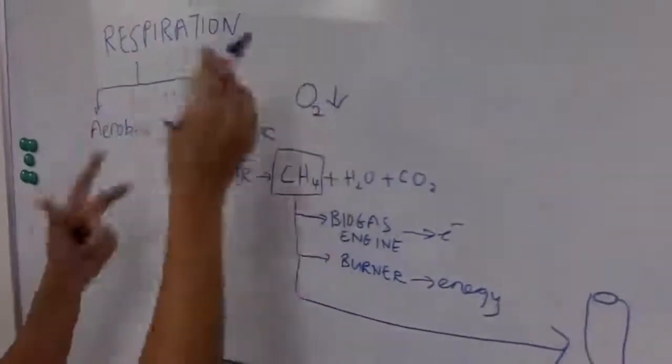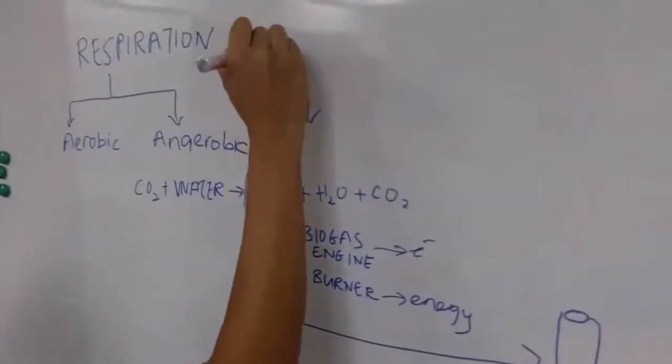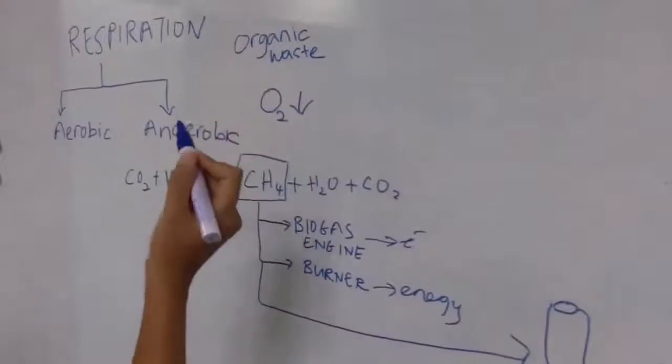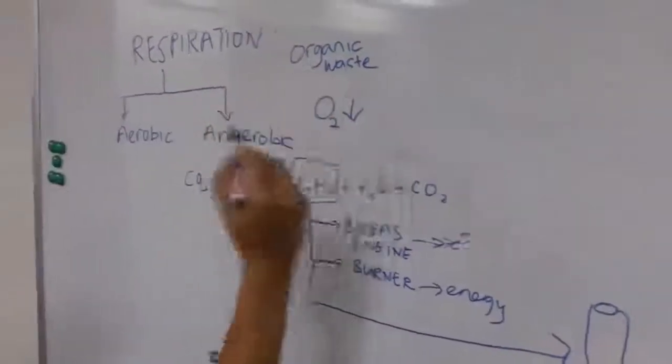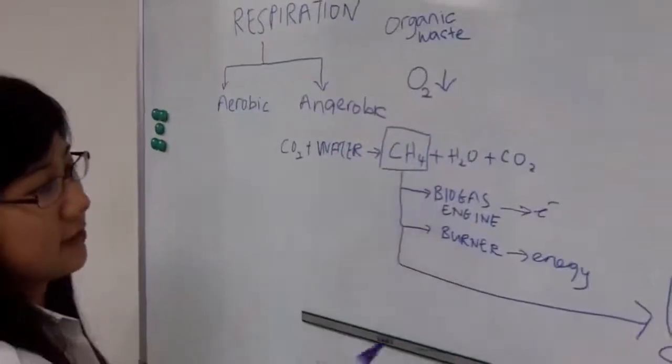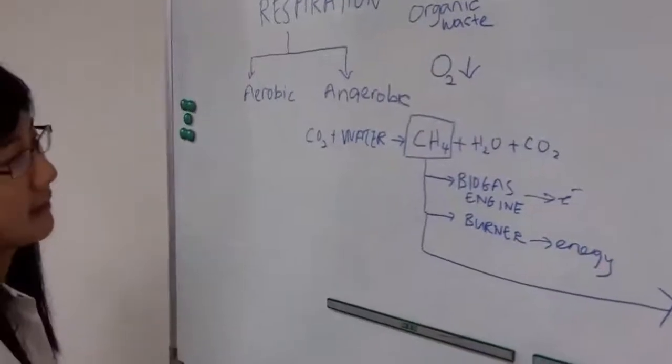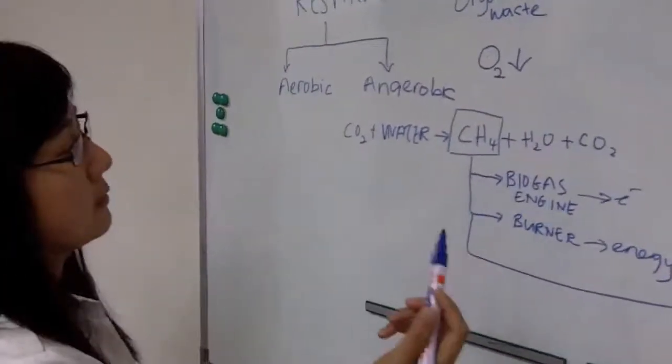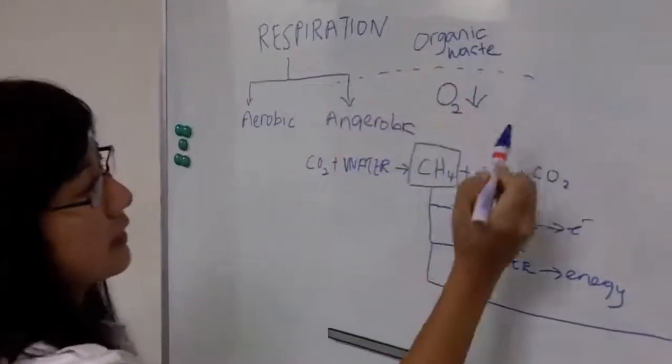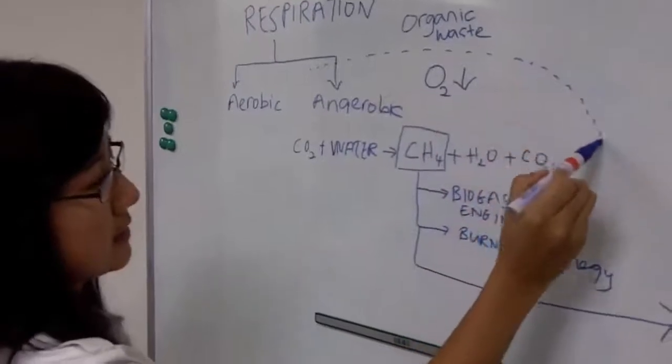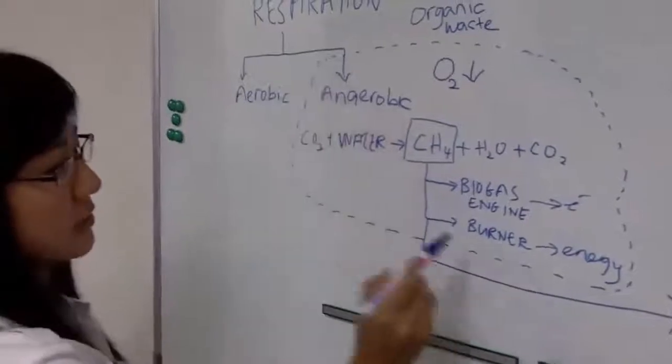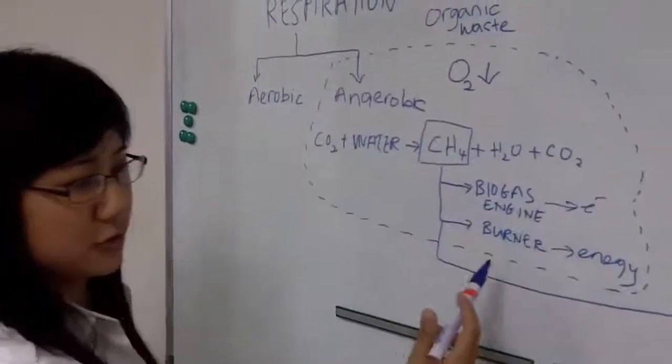So if you take organic waste, or any type of waste that is organic, and put it through a situation of low oxygen to generate methane, you are then presented with this series of possibilities. What we're trying to do with our biogas system is actually capture this to create a situation where the generation of methane is optimized, and you can use it as eventually a source of energy through the biogas engine or through the burner.